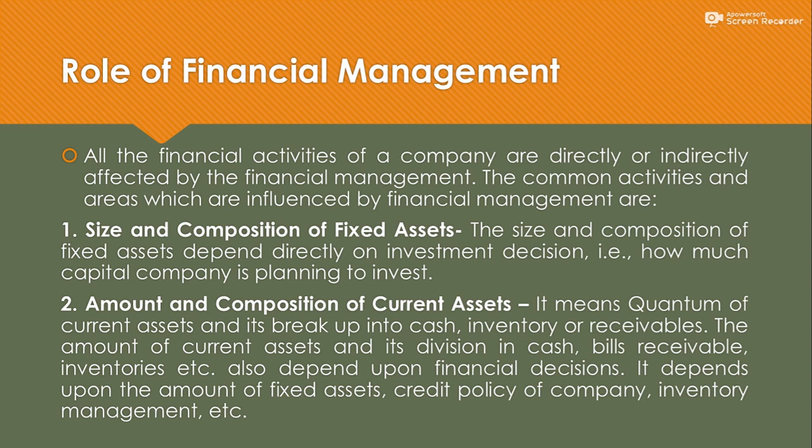Kyunki jitni zyada hamare paas fixed assets hongi, utna hi hamare liye beneficial rahta hai — hamare profit margins increase ho jaate hain. Hamne financial management mein very first decision yeh lena hai ki hume apne fixed assets mein kitna paisa invest karna chahte hain. Next is amount and composition of current assets — it means quantum of current assets and its breakup into cash, inventory, or receivables. Aap kitna proportion current assets mein invest karna chahte hain, aur us proportion ka bhi division karna hai — break up into cash, kitna inventory, inventory means stock.